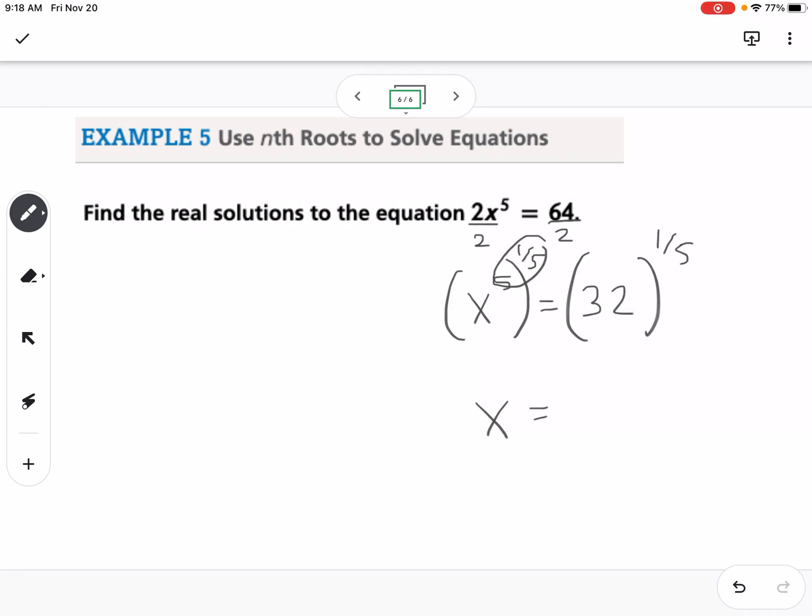Again, we know that what number raised to the fifth power is 32. That would be 2. So that would be our solution. Okay, let me know if you have any questions. Let's go. Thank you.